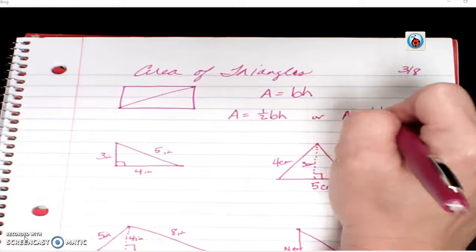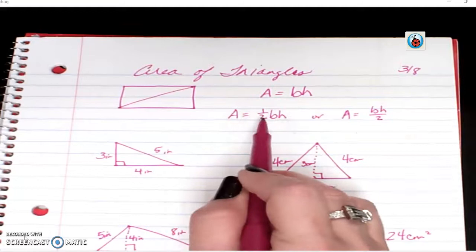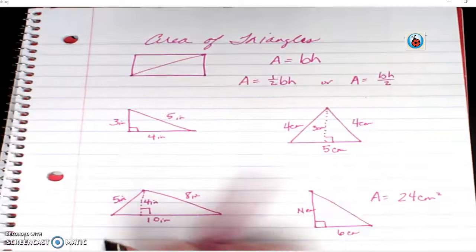Or, area equals base times height divided by two. Because we know that half of something is the same as dividing by two. This is the way you're going to see your mathematics chart, but this way is the exact same thing.